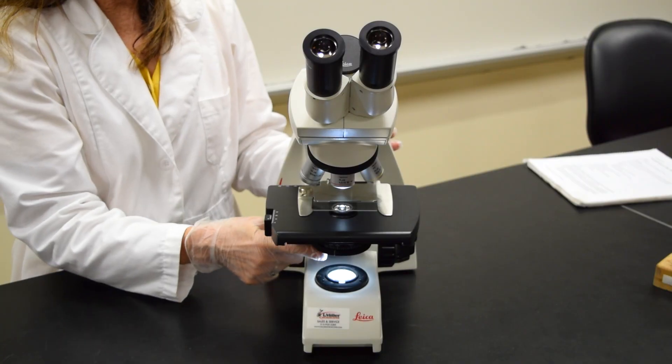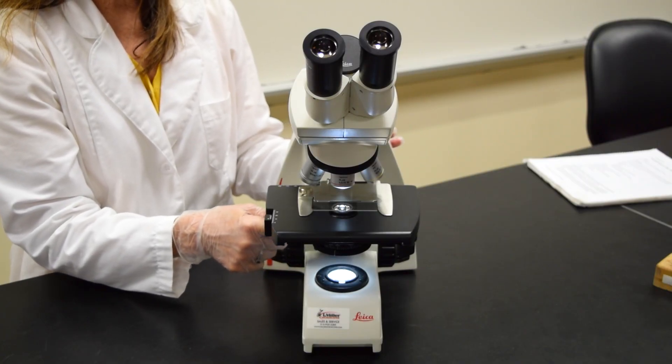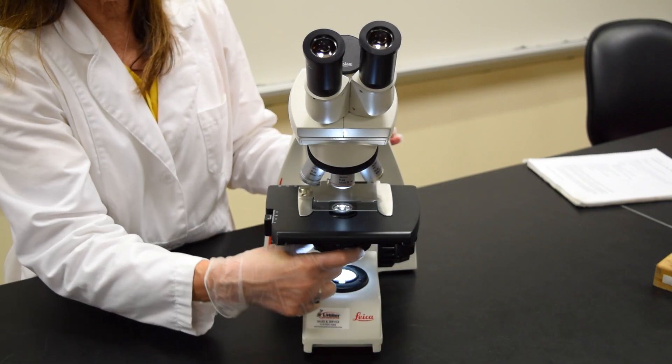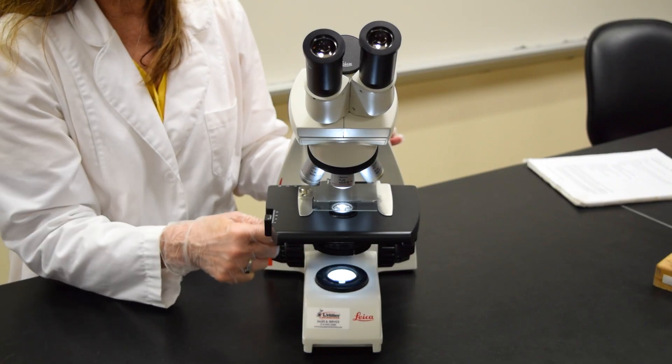Below the stage is the condenser, which consists of a series of lenses, as well as a diaphragm that adjusts the light as it goes through the slide.